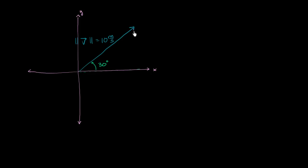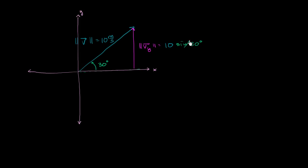We've broken down these vectors before. The magnitude of the vertical component right over here is going to be 10 sine of 30 degrees — 10 meters per second times the sine of 30 degrees. This comes from basic trigonometry, SOHCAHTOA. Sine of 30 degrees is 1/2, so this is going to be 5 meters per second. That's the magnitude of its vertical component.